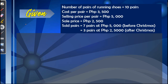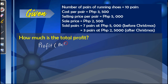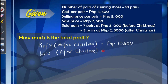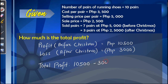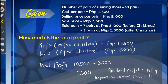After selling all the running shoes before and after Christmas, let us identify the total profit. The profit before Christmas was $10,500, and after Christmas there was a loss of $3,000. To find the total profit, we subtract $3,000 from $10,500, which gives us $7,500. The total profit in selling 10 pairs of running shoes is $7,500.